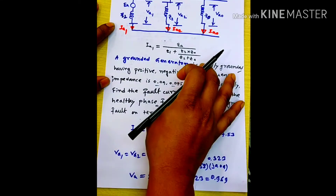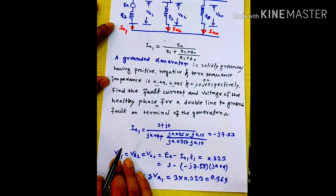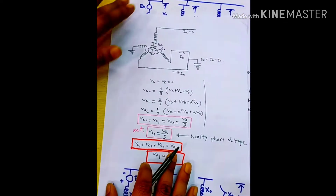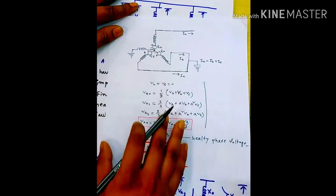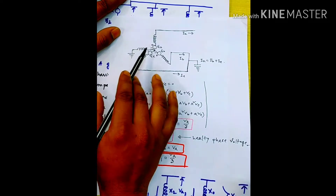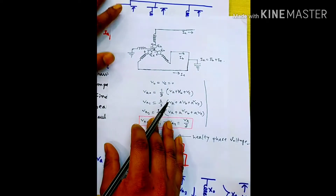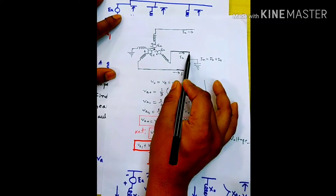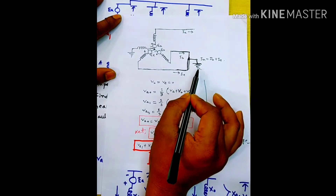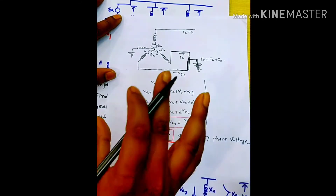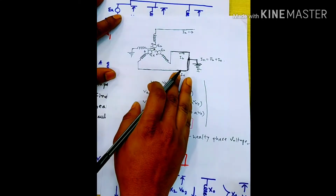There is a double line-to-ground fault system in this generator. There is some impedance, but the fault is on the healthy phase, so there is a voltage. The double line-to-ground fault is like this — suppose the B-phase or C-phase faults to ground. So in our example, there is a line to ground, and the other line to ground as shown.